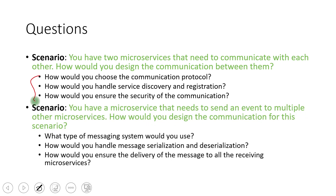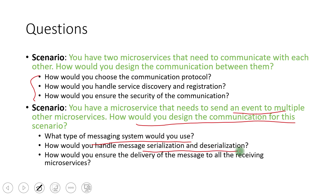The second scenario: you have a microservice that needs to send an event to multiple other microservices — how do you design the communication? Since it involves events, we would use RabbitMQ, Kafka, or ActiveMQ. Know the advantages and disadvantages of these message brokers. For message serialization and deserialization, we can use Avro, JSON, or Thrift formats. To ensure message delivery to all receiving microservices, we configure acknowledgements from the broker and rely on it to ensure processing by the underlying system.